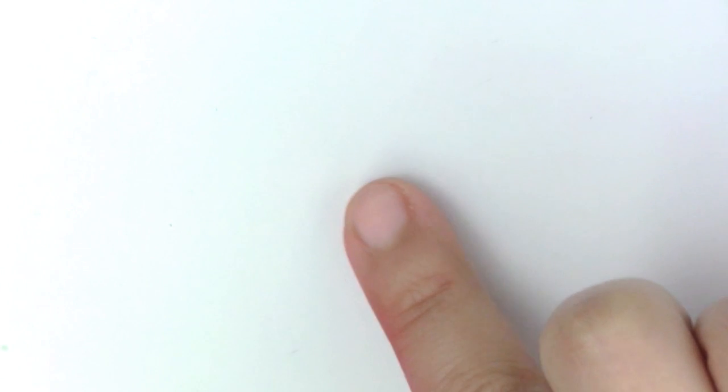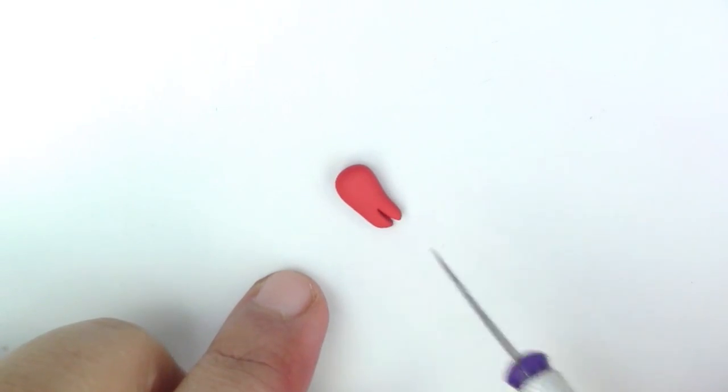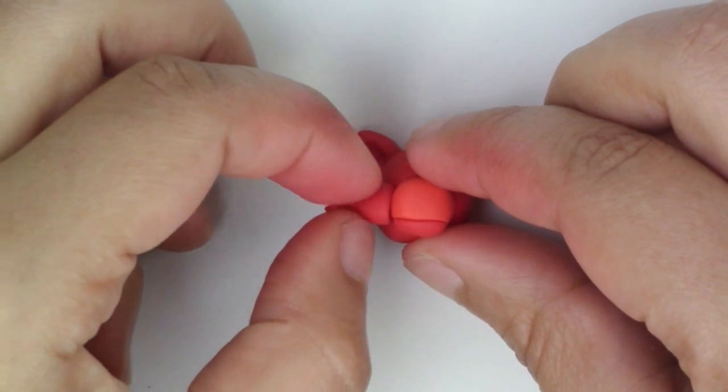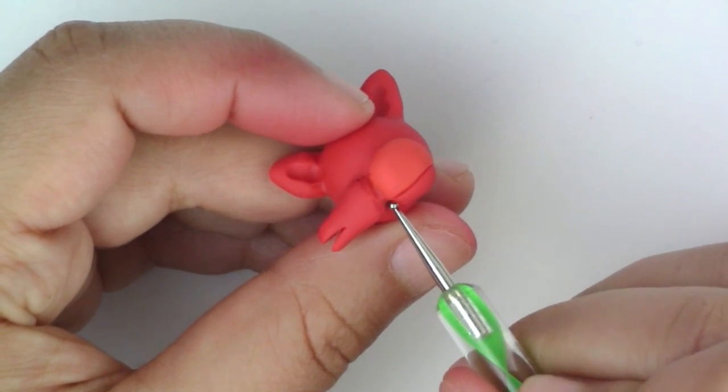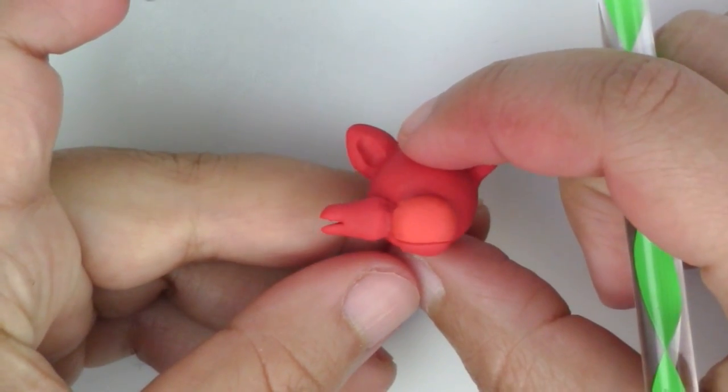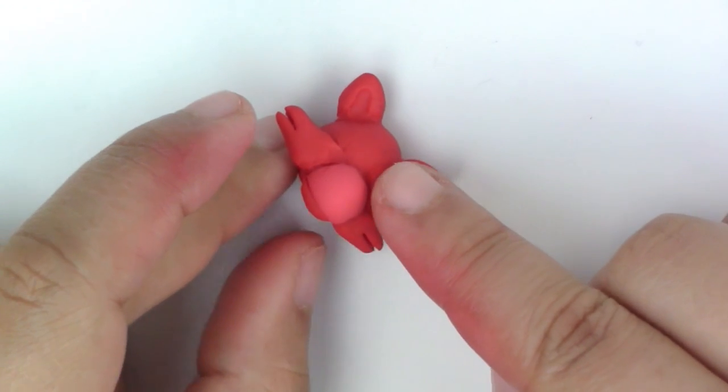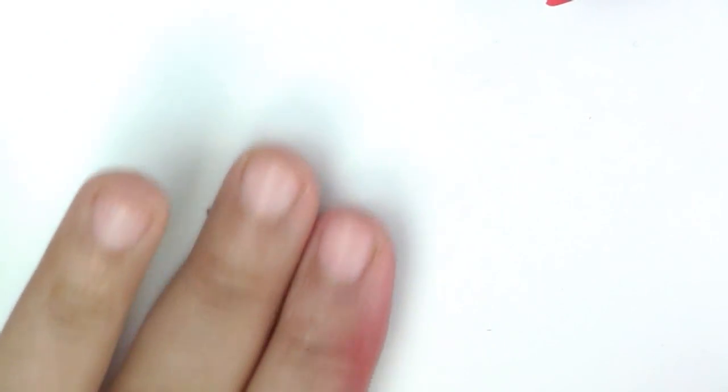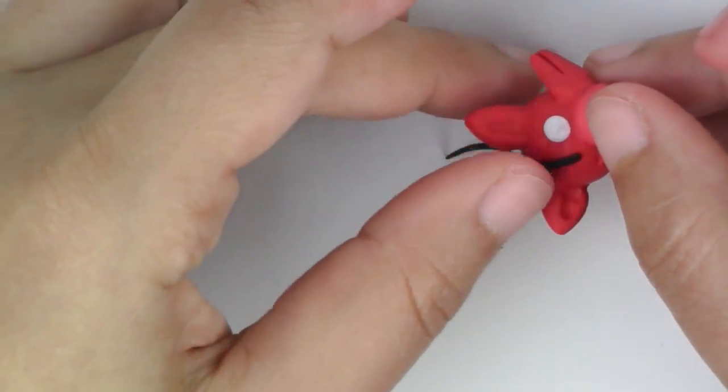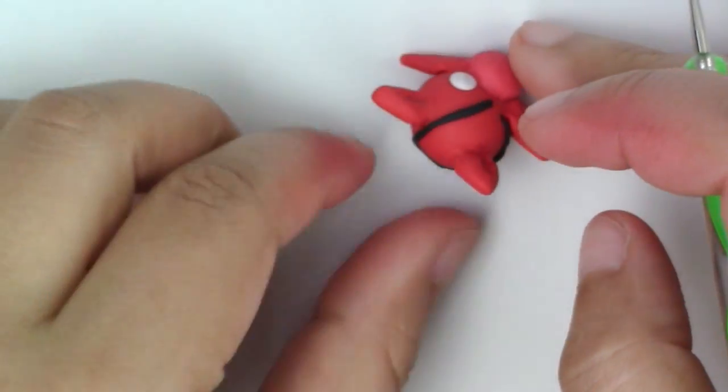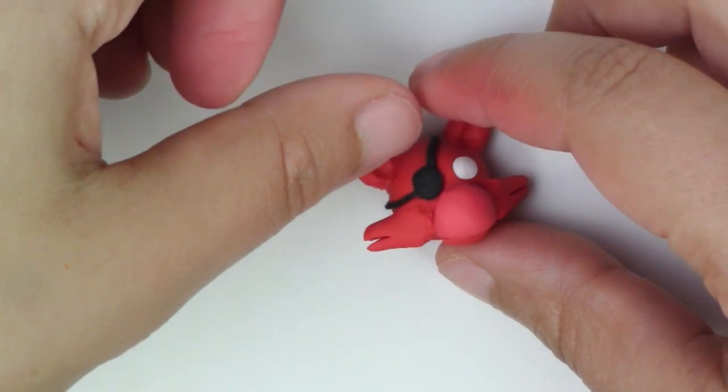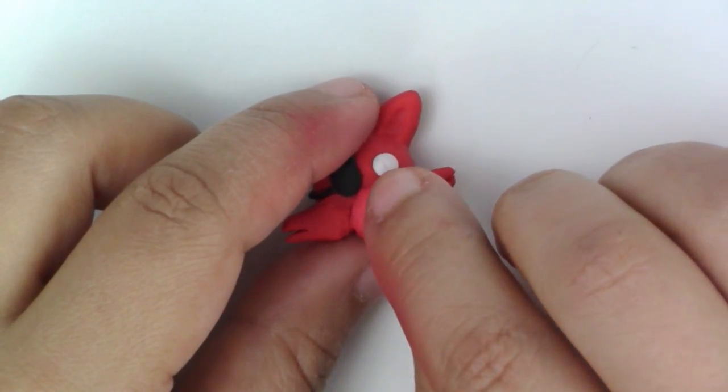Roll and flatten a teardrop shape for the whisker part. Of course, you're going to be smoothing everything in. Flatten a circle for the eyes. Roll black for the strap around the eye patch, and then place the circle on top. Don't forget the nose.